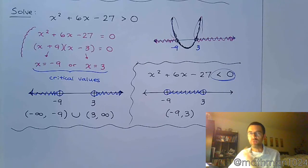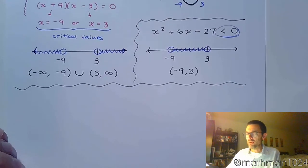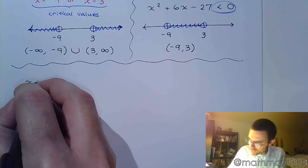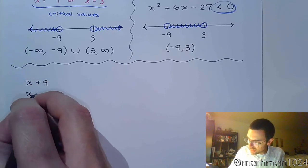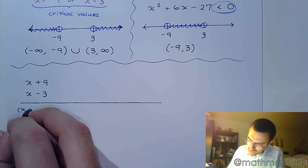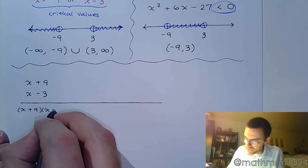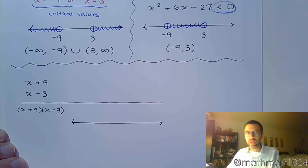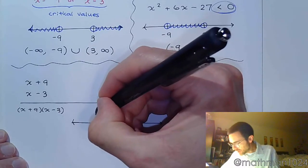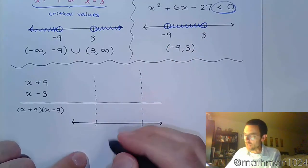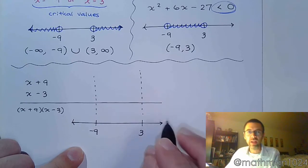Let me show you another way of doing this, because some of these polynomials and expressions are going to get more complicated and I want you to have a foolproof method. We take that expression and factor it into x plus 9 and x minus 3. What I'm going to do here is called a sign table, where I look at what sign I get from each factor individually and then what happens when I bring it all back together. I set it up using the two critical values we've already identified: negative 9 and positive 3.